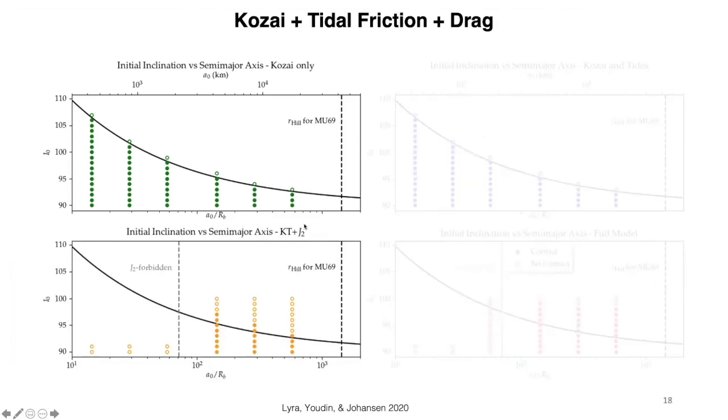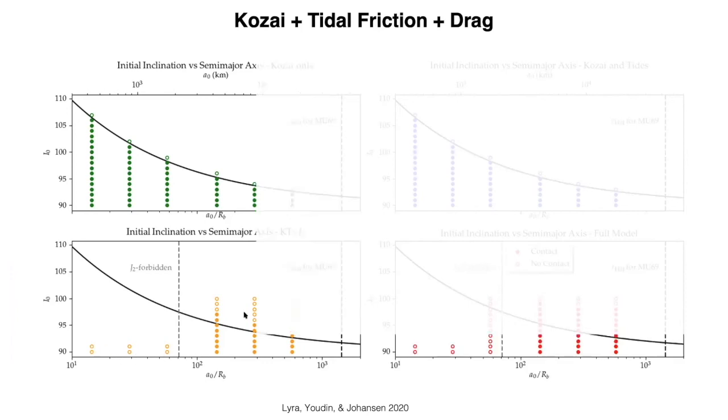The situation starts to change once you include the permanent quadrupole. So, now what is going on is that the permanent quadrupole is inducing precession, which breaks the Kozai-Lidov resonance. Now, you start to have a forbidden zone where precession is too strong and you do not have Kozai-Lidov oscillations anymore.